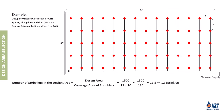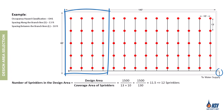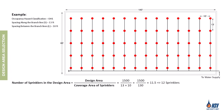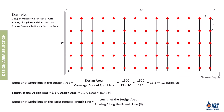Since NFPA 13 requires the design area to be located in the hydraulically most remote part of the system, we'll select these 12 sprinklers on the left side of the project, which is farthest from the water supply. Next, we need to calculate the number of sprinklers on the most remote branch line using the formula for the length of the design area. When the spacing between sprinklers along the branch line is equal, we find the number of sprinklers on that branch line by dividing the length of the design area by S, rounding up if the result is not a whole number.